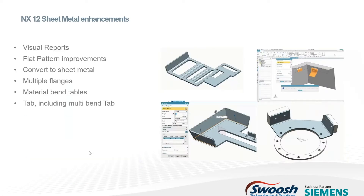For NX12, there's some neat stuff you might see. If you work with sheet metal every day, you're probably familiar with some of the current limitations — like when you create a flange, you can only create one flange at a time. Now you can do sets of flanges. Tabs can be created as multiple profiles, and you can also create what's called multi-bend tabs, like the lower right-hand illustration.